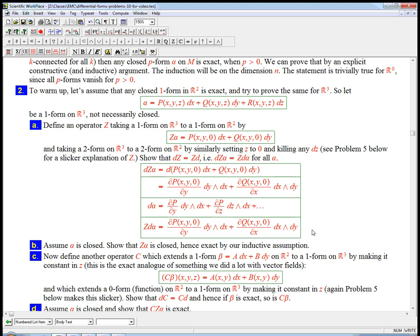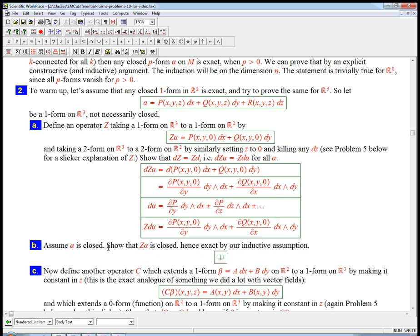So, this says it's a very natural thing to do, to just smoosh this down, or essentially just look at what alpha does only on the plane z equals zero, and create a two-dimensional one form out of that. And it commutes with the operation d. That's really crucial. Now, here's one very easy consequence of that. Suppose that, assume that alpha is closed, the question is show that Z alpha is closed, and hence exact by our inductive assumption. So this isn't hard if you're following along. If d alpha is equal to zero, then we want to know if the same thing is true of Z alpha. Well, I calculate d of Z alpha. Well, that's the same as Z d alpha, but hey, d alpha is zero. So, that's Z of zero, and Z of zero is clearly zero. It's a linear mapping. So, in fact, Z alpha is closed. That's what we wanted to show.